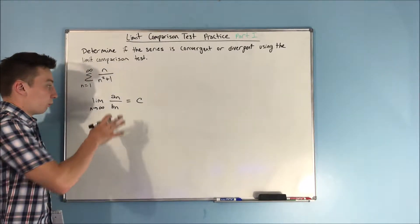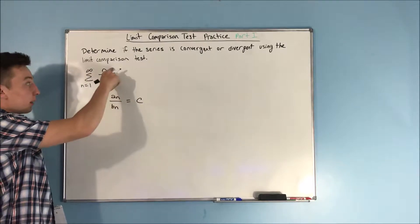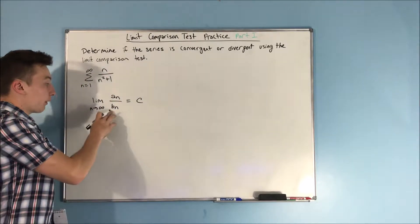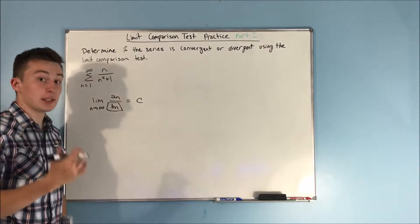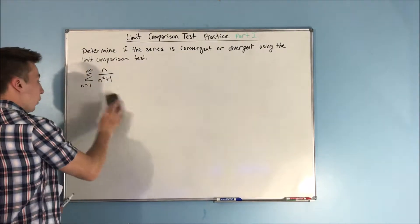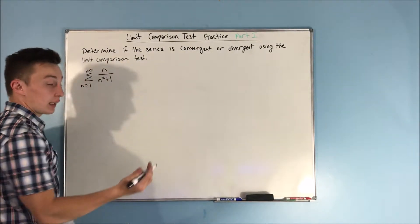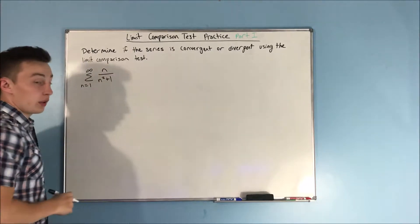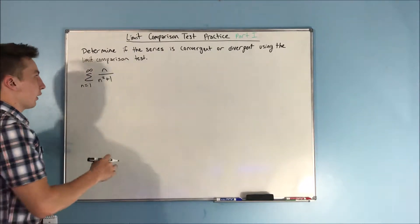First we need to figure out our a sub n — that's going to be n over n squared plus one. But we need to figure out what we're going to compare to, and that's b sub n. How do we find b sub n? It's kind of just like with the comparison test. The first thing we want to do is just eliminate those constants that are kind of just dangling on the n.